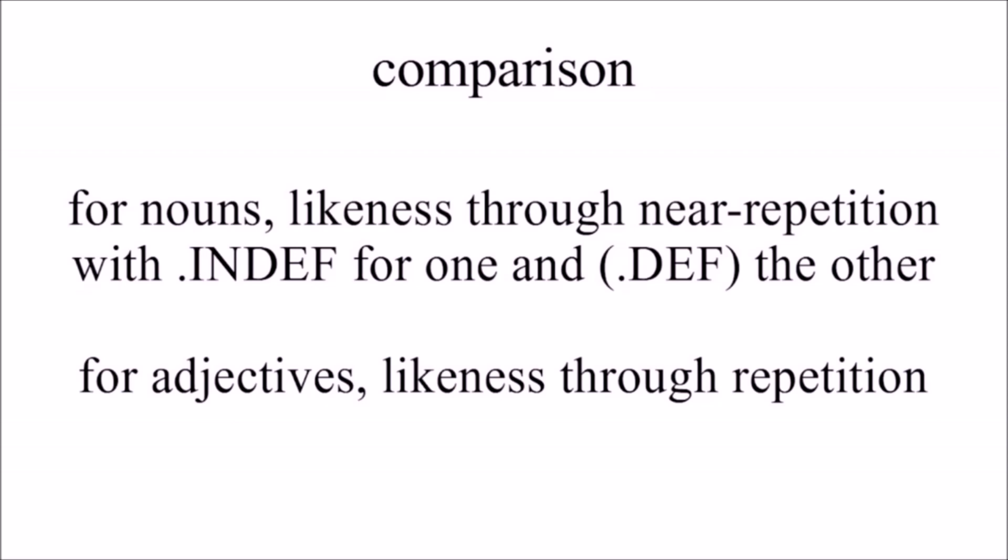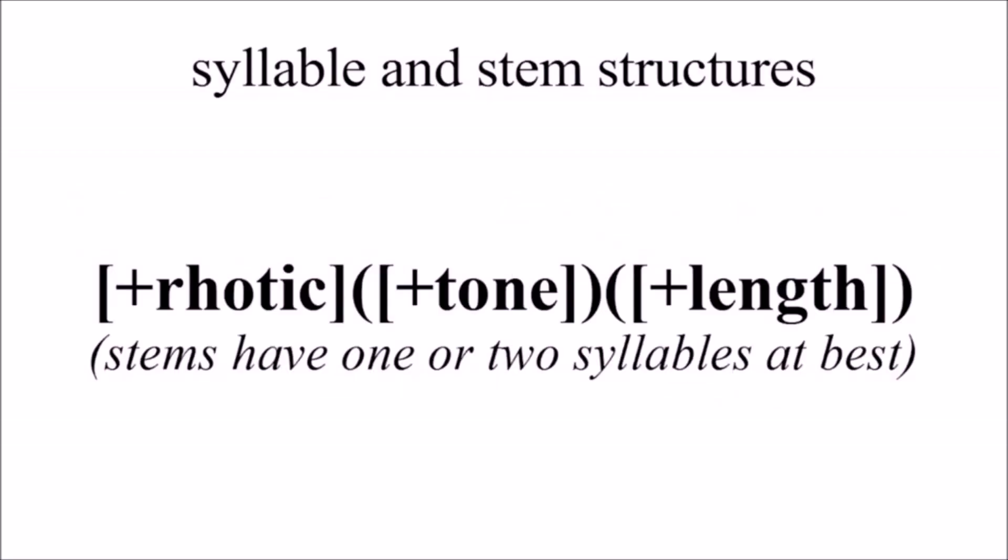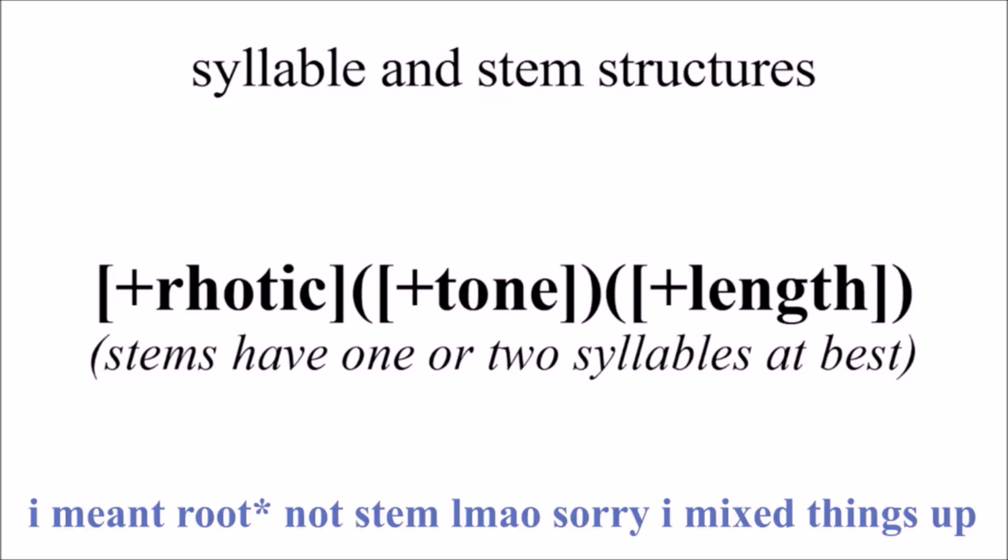And for adjectives, because adjectives accord their definiteness with regards to the noun, it's actually just gonna be blatant repetition of the adjective. There's also a syllable and stem structure. There's a multi-syllabic consonant as the nucleus, an occasional tone, and occasional length. And stems have one or two syllables at best.